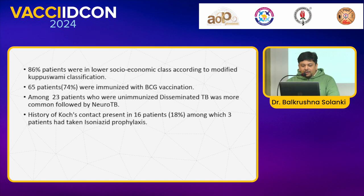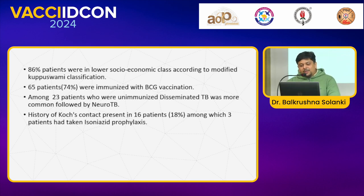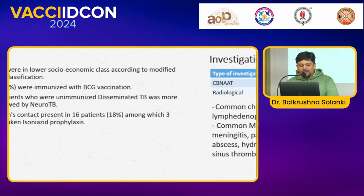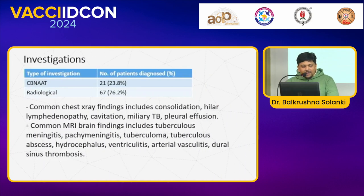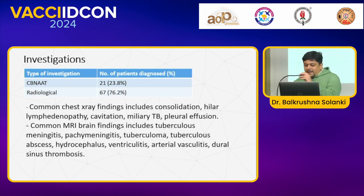86% of patients were in the lower socio-economic class according to modified Kuppuswamy classification. 65 patients were immunized and 23 patients were unimmunized, among whom disseminated TB was more common followed by neurotuberculosis. History of contact with a TB case was present in 16 patients, among which 3 patients had taken isoniazid prophylaxis. 21 patients were investigated and diagnosed by CBNAAT and 67 patients were diagnosed radiologically.